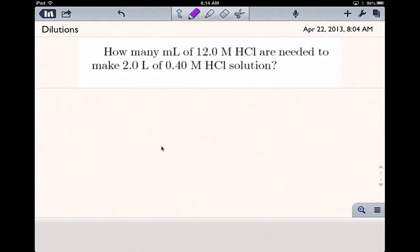How many milliliters of 12 molar hydrochloric acid are needed to make 2 liters of 0.4 molar hydrochloric acid solution? This is a dilutions question, and the formula for diluting solutions is M1V1 equals M2V2.